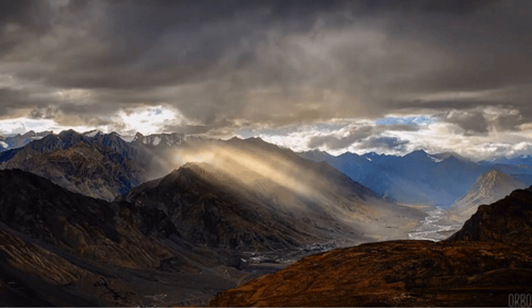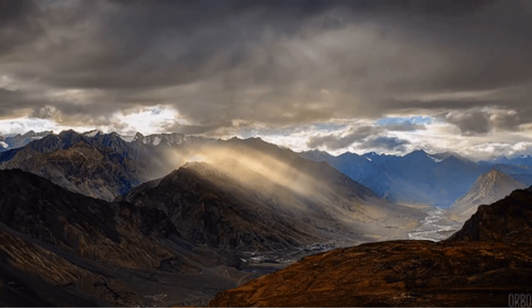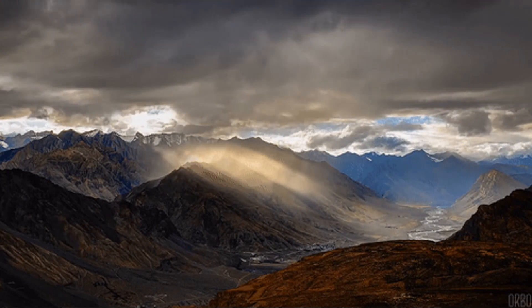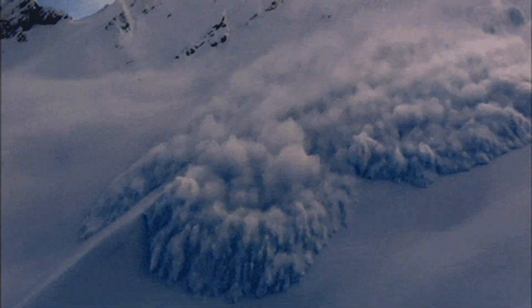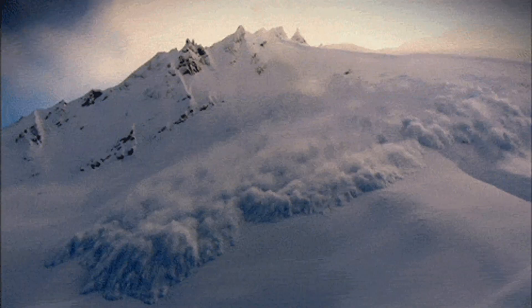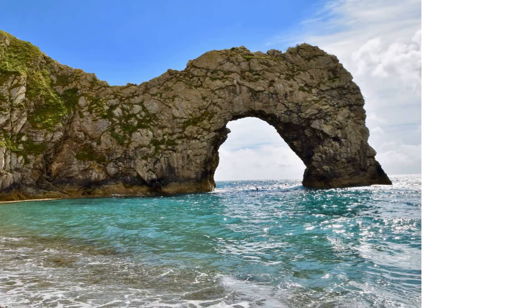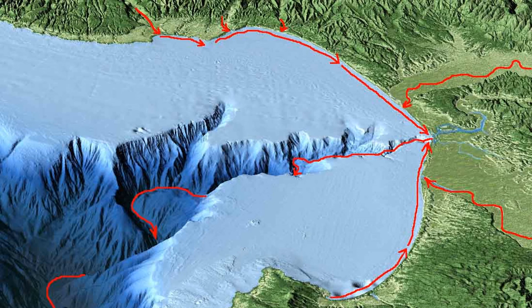On Earth, environments of net erosion are typically found in terrestrial and non-marine areas. These environments commonly occur in large mountainous regions where weathering is intense and erosion happens quickly due to glaciers, mud flows, and flash floods. There are also environments of net erosion in the ocean, such as cliffed coastlines and submarine canyons, where water currents strip away sedimentary rocks and loose particles.